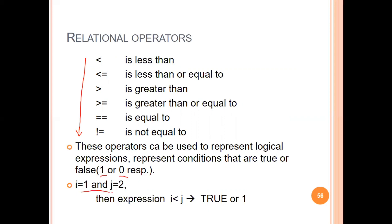For example, if i is equal to 1 and j is equal to 2, the expression i less than j means 1 less than 2, which is true — the answer is 1. So we can see how relational operators work in such expressions.